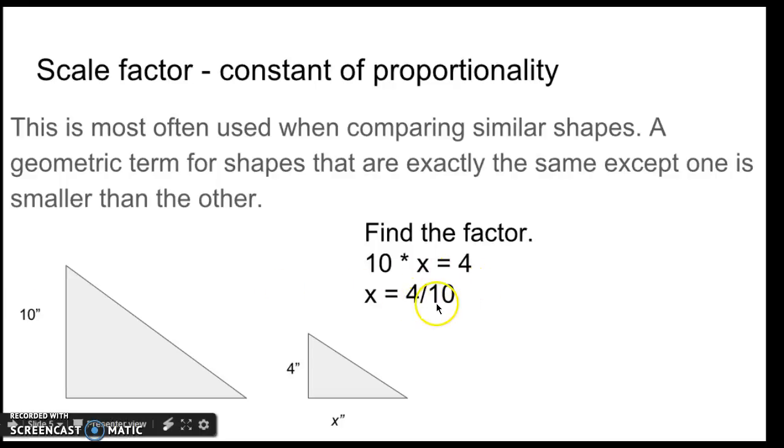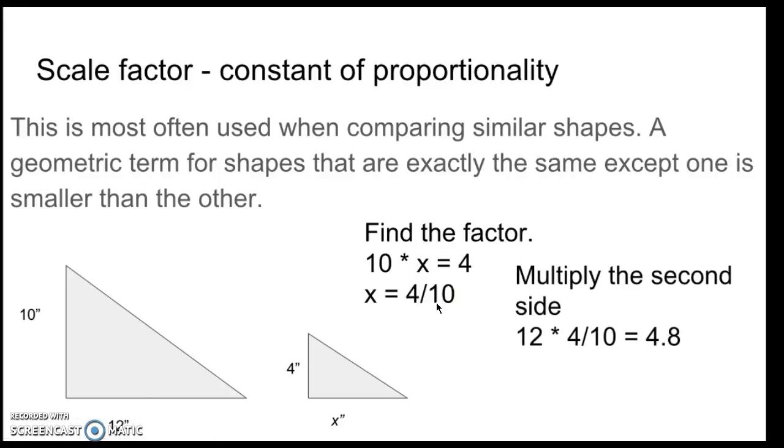So, my scale factor is 4 tenths. So, I multiply the second side. 12 times my scale factor of 4 tenths. And if I put that in my calculator or I just multiply, like I know 4 times 12 is 48, divided by 10 is 4.8. So, x equals 4.8 inches.